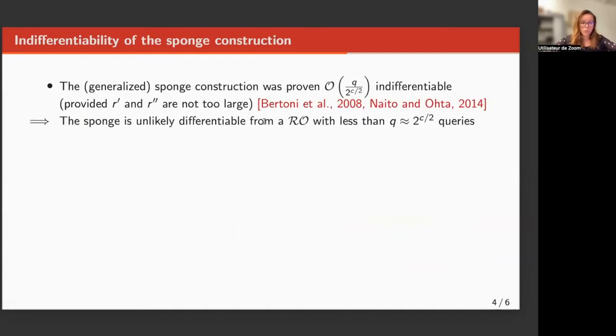Now, going back to the sponge construction, it has been shown to be indifferentiable with a bound of form Q over 2 to the C over 2. Concretely, it tells us that in order to be able to differentiate the sponge from a random oracle, one needs at least 2 to the C over 2 queries. And below this number of queries, any attack on the sponge cannot be easier than the same attack on a random oracle.